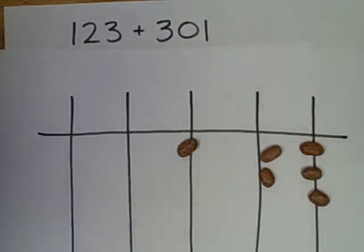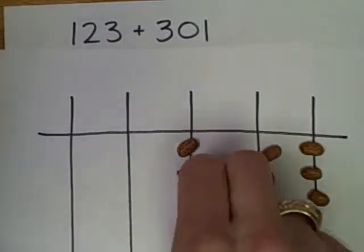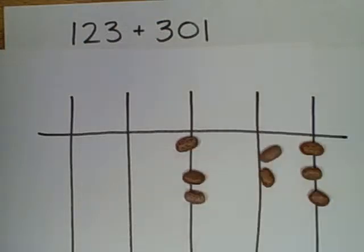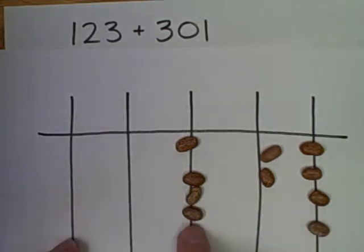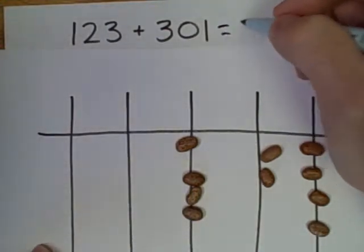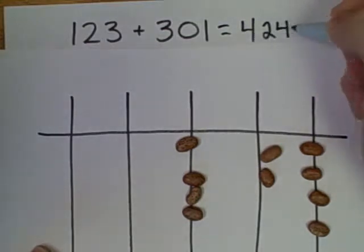The second addend is 301. So one, two, three hundreds, one. And then I see that I've got 424. So my sum is 424.